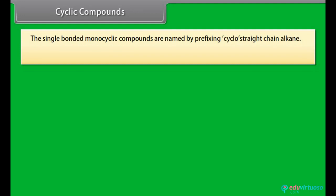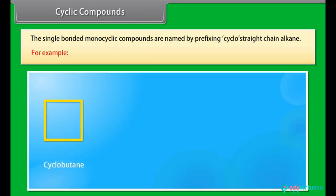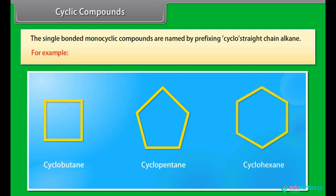Cyclic compounds: the single-bonded monocyclic compounds are named by prefixing cyclo to the parent chain alkane name. For example, cyclobutane, cyclopentane, cyclohexane.